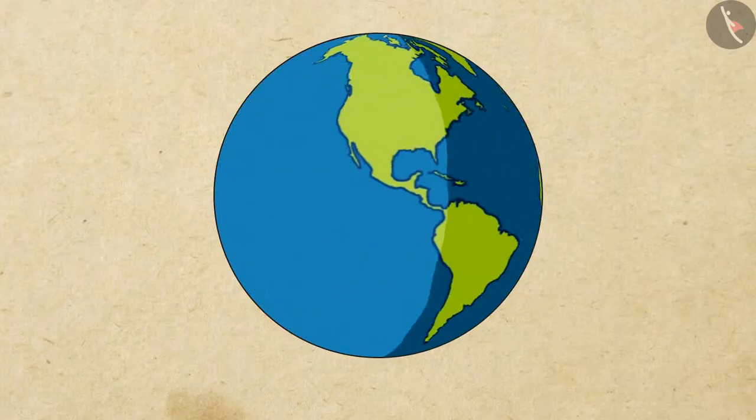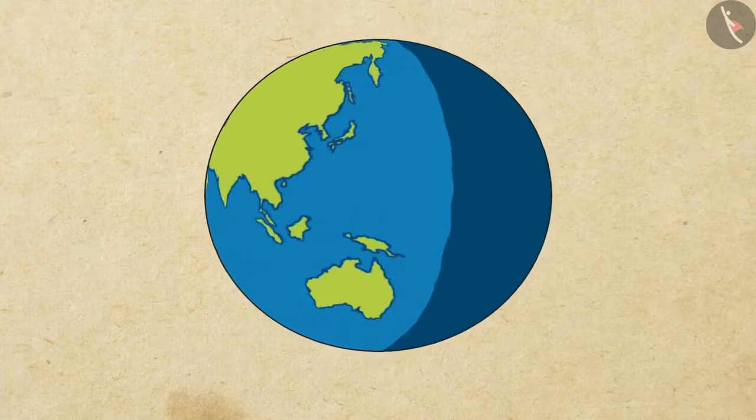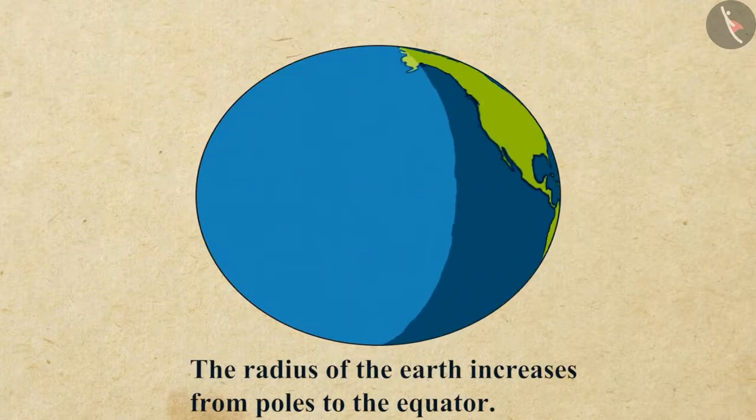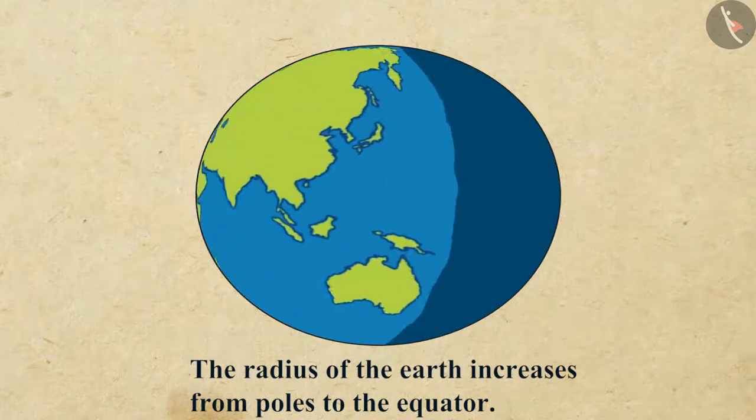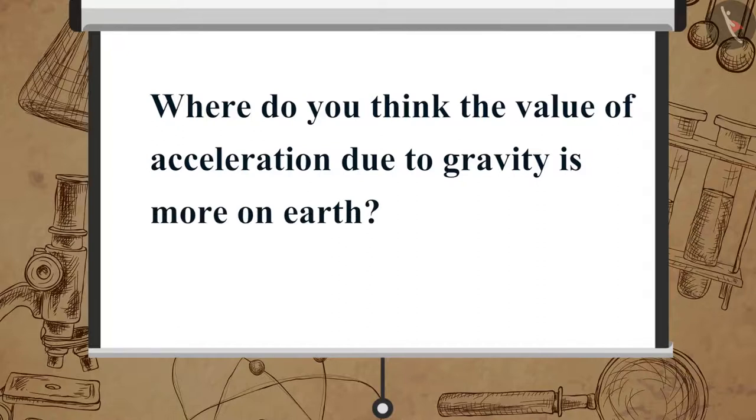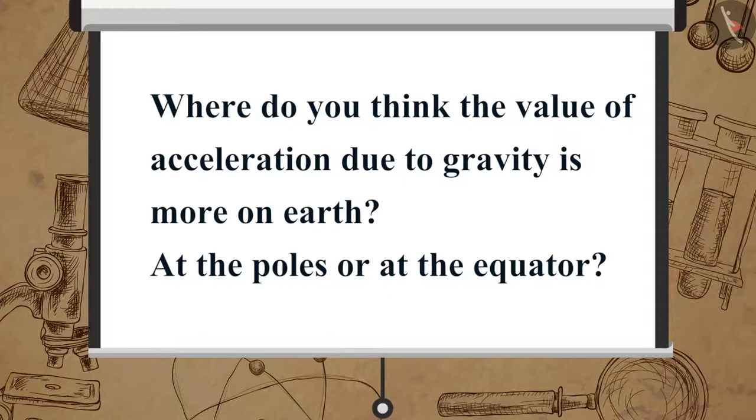As you might know, the Earth is not a perfect sphere. The radius of the Earth increases from poles to the equator. Where do you think the value of acceleration due to gravity is more on Earth? At the poles or at the equator?